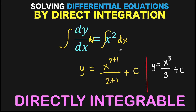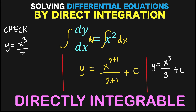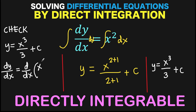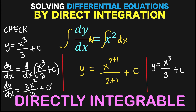Just like that, we already know the function y of x that causes the observed derivative dy over dx equals x squared. To check if our answer is correct, we can just reverse the process. From the result y equals x cubed over 3 plus c, we take the derivative of both sides. So dy over dx equals the derivative of x cubed over 3 plus c, which equals 3x squared over 3 plus 0. Since 3 divided by 3 is 1, we arrive at dy over dx equals x squared, which is the original given equation.